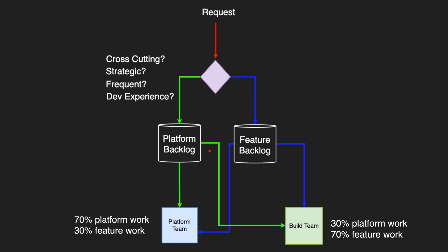Deciding who works on this: the platform team doesn't use 100% of their time for platform work. You may decide that 70% of their time is for platform work while 30% is for feature work. And for the build teams, you don't have to allocate 100% to feature work — you could allocate 70% to feature work and then 30% to contributing to platform work.